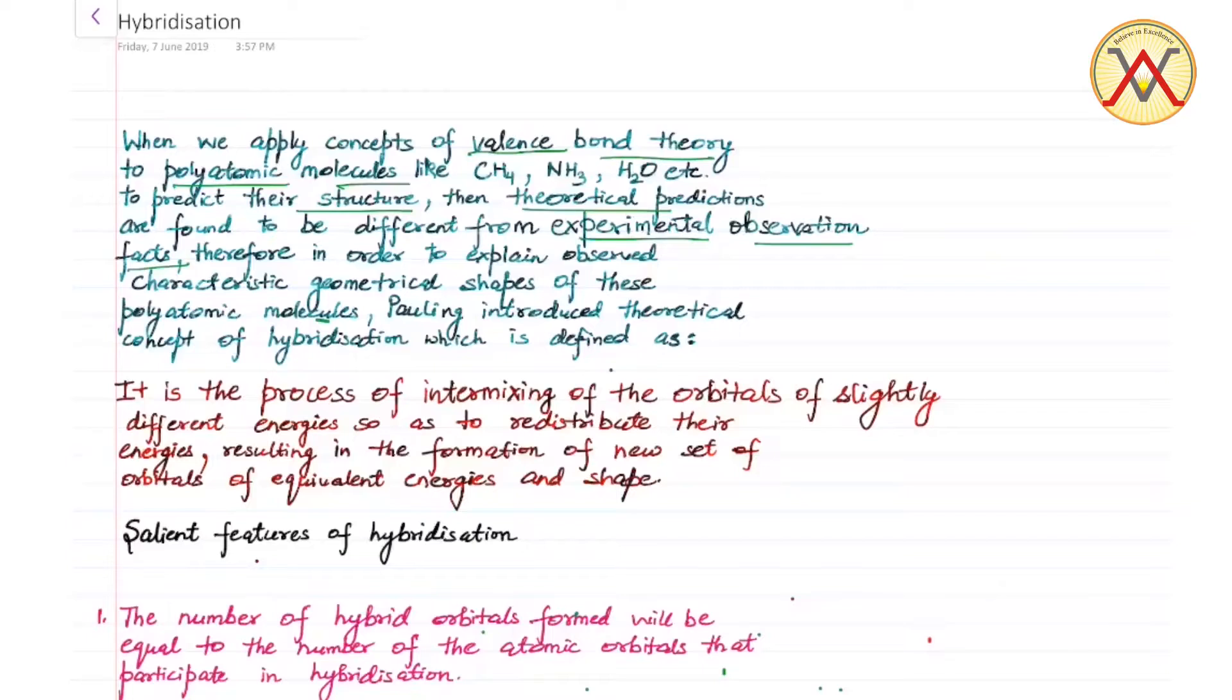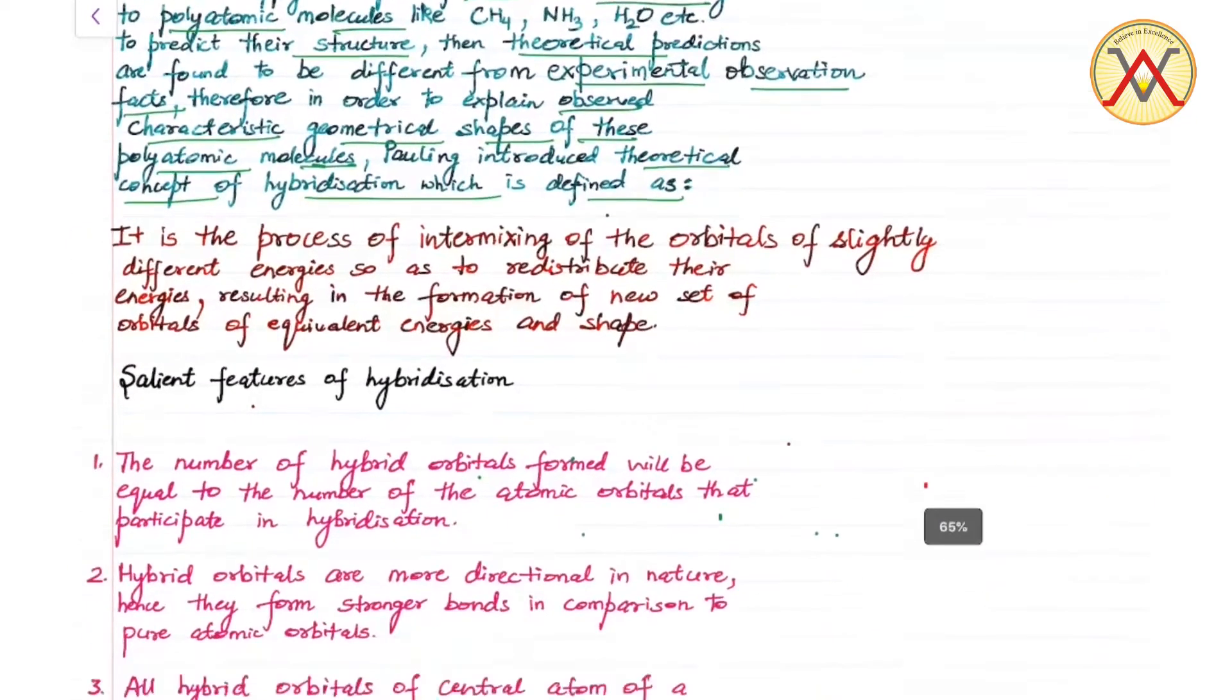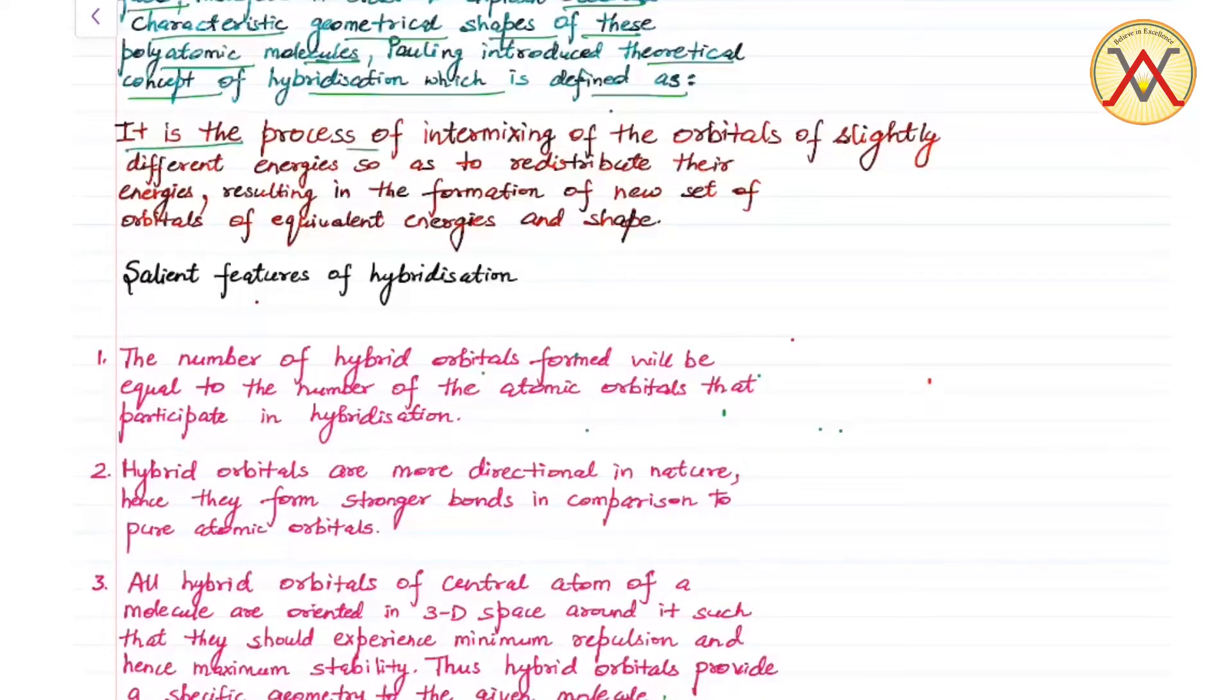Therefore, in order to explain observed characteristic geometrical shapes of these polyatomic molecules, Poling introduced the theoretical concept of hybridization which is defined as: it is the process of intermixing of the orbitals of slightly different energies so as to redistribute their energies, resulting in the formation of new set of orbitals of equivalent energies and shape.